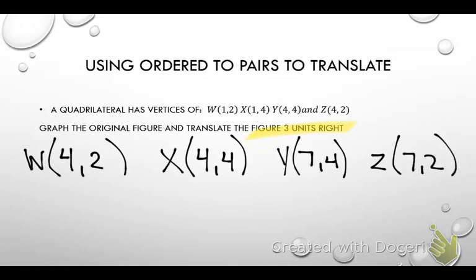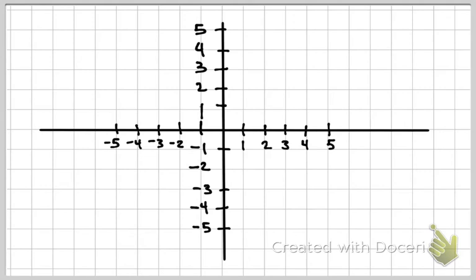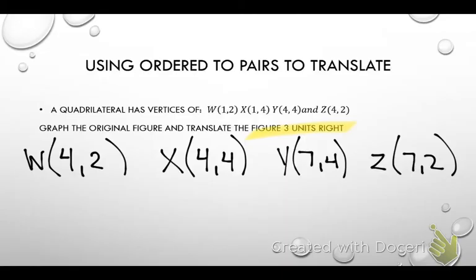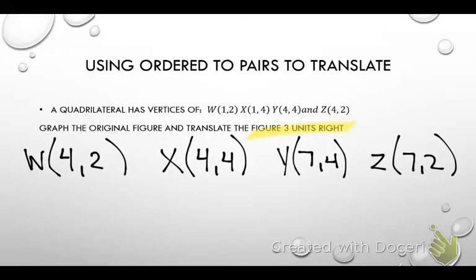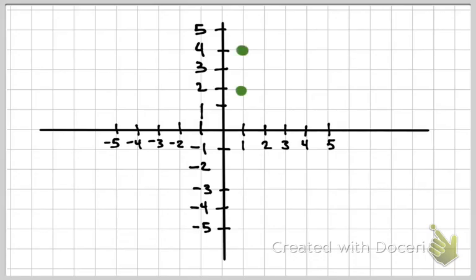Here's what it looks like on the graph. Give me the first point. I'm going to need y'all's help. What was the first point on the original figure? Wait, no. The first point is 1, 2, then 1, 4, then 4, 4. So over 1, up 2, over 1, 4, 1, 4, and then 4, 4, and then 4, 2. And that went W, X, Y, and Z.